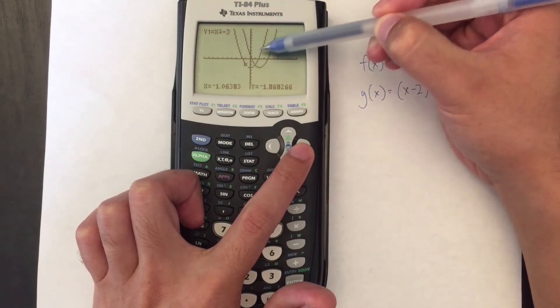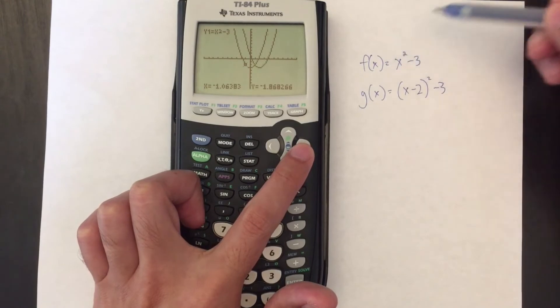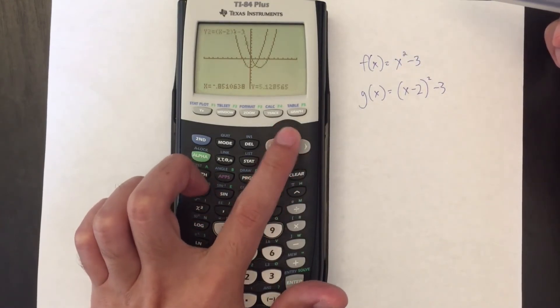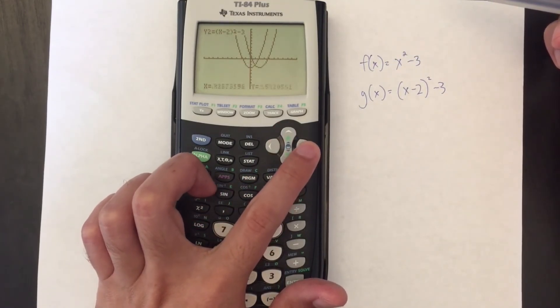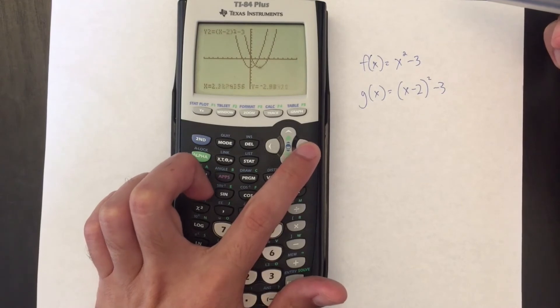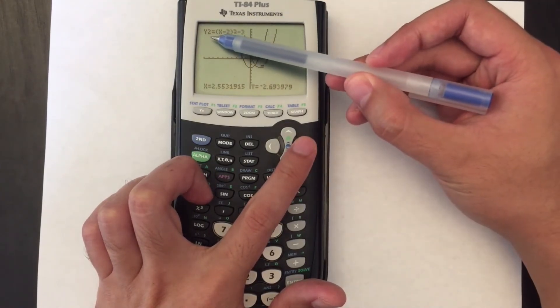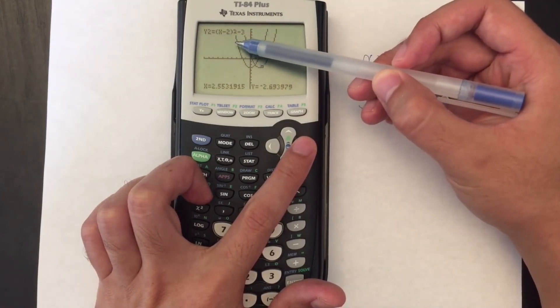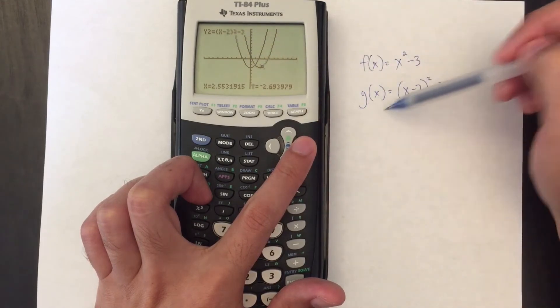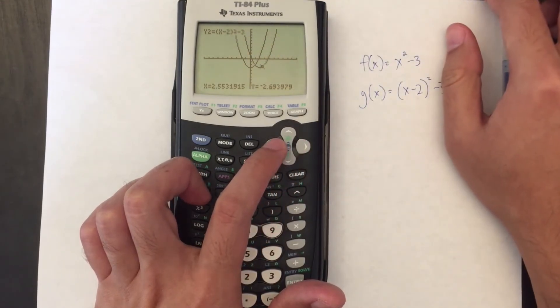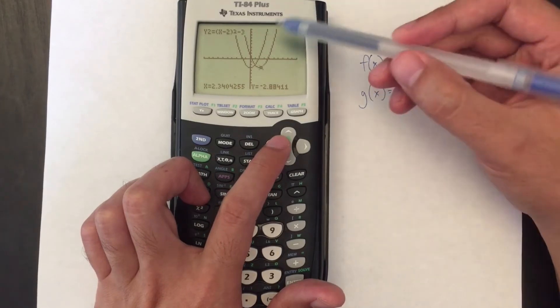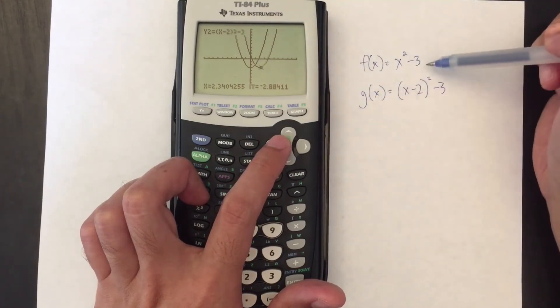So that's how I know the graph on the left is f(x). And if I want to move my cursor to the next graph over here, up in the corner it says y2 = (x - 2)² - 3. So that's how I know it's g(x), and what I can actually do is just estimate how it's been translated from the original function.